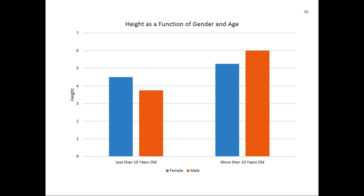If you're just looking at age to predict height, you'd miss this entirely. If you're just looking at gender, you'd also miss it — you'd simply conclude men are taller. But by performing a two variable ANOVA with both gender and age, you can identify this interaction effect: the results flip based on the grouping variable combination.